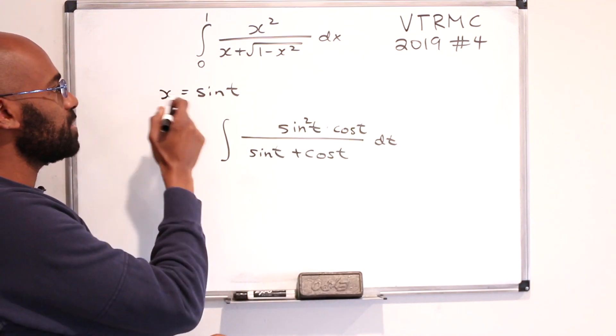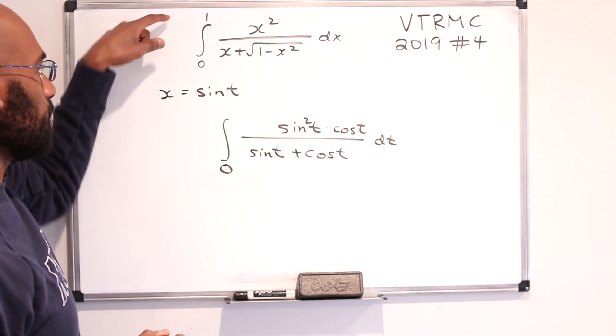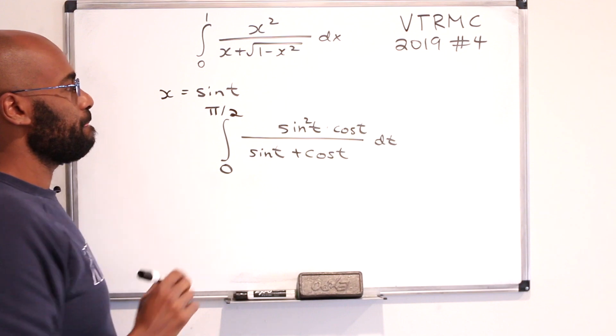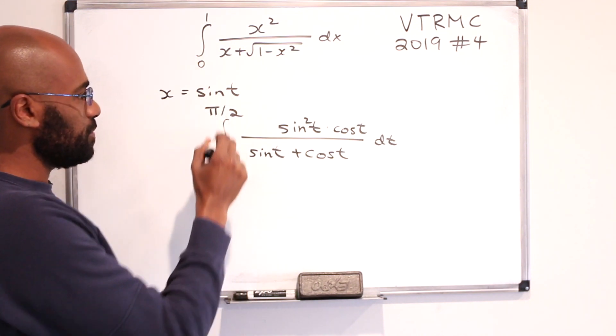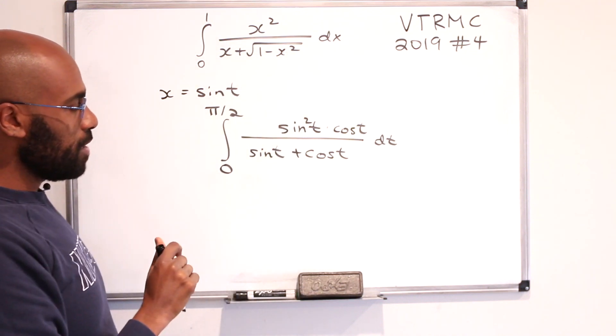Now what about the bounds? When x is zero, t is going to be zero, and when x is one, t is going to be pi over two. Now there are other angles that give the same values here, but we know it has to be in this range because of the fact that we have this quantity right over here.